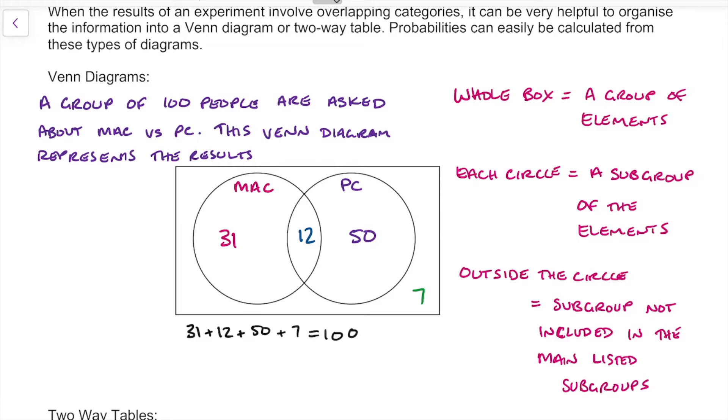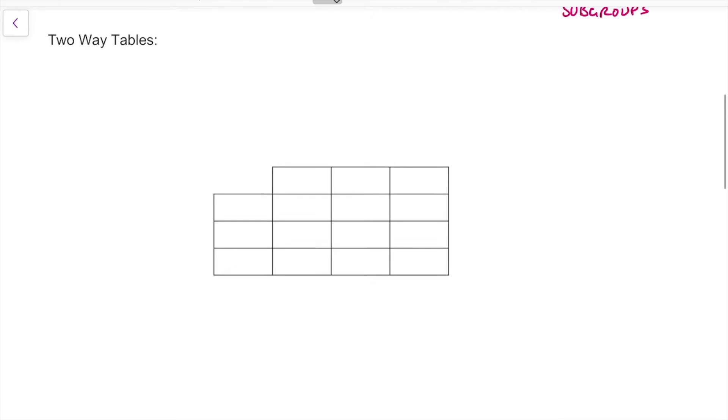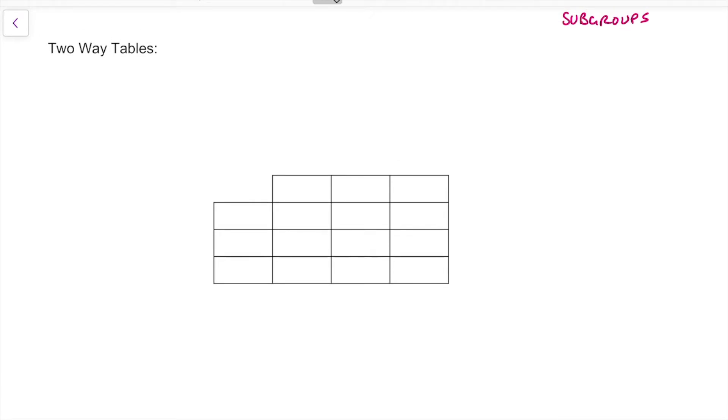Let's have a look now at two-way tables. As you may have guessed, two-way tables are exactly that. They show two bits of information on our table, or they show multiple bits of information.